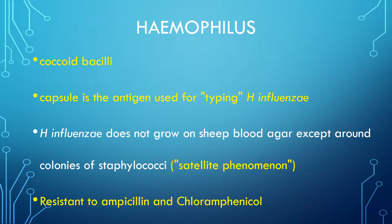Haemophilus are coccobacilli and the capsule is used for typing of H. influenzae. This organism needs an enhancement growth medium that contains isovitalics. H. influenzae does not grow on sheep blood agar except around colonies of staphylococci — this is known as the satellite phenomenon. Unfortunately, there has been an increase in resistance to ampicillin and chloramphenicol, usually controlled by genes on transmissible plasmids.